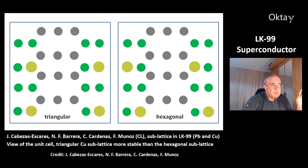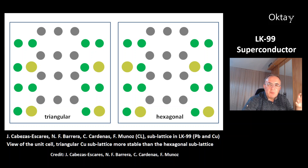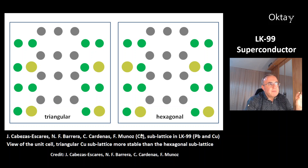This is a new work from Cabezas-Escares, Barrera, Cardenas, and Muñoz from Chile. It shows the sublattice in LK99. In this picture you can only see the lead ions and the copper ions — the different categories of lead ions are shown in green and grey, and in yellow are the copper ions. They are actually smaller, but shown larger here for better understanding. There are two theoretical possibilities: the triangular sublattice and the hexagonal sublattice. According to these scientists from Chile, the triangular sublattice is slightly more stable than the hexagonal one.